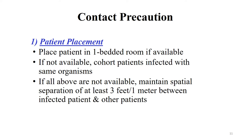For contact precaution, when encountering patients with infections transmissible through direct contact, you can place the patient in a one-bedded room if available, isolating them from other patients. If not available, cohort patients infected with the same organism - for example, group all chicken pox patients and place them in a single room or ward. If neither option is available, maintain a spatial separation of at least three feet or one meter between the infected patient and other patients, which will reduce the chances of transmission.